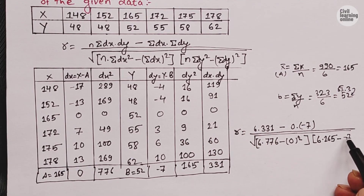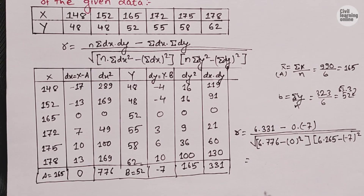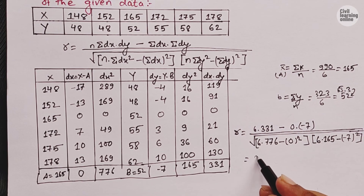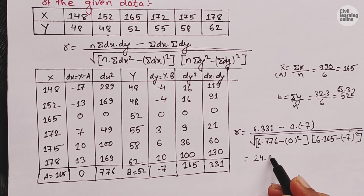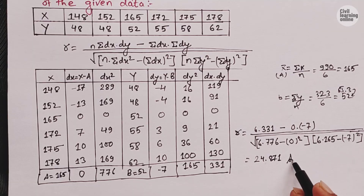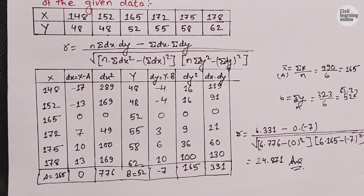On solving this we get the final answer. The final answer is r equals 0.871. I hope you understood this video. See you in the next video — till then stay safe, take care of yourself, and do not forget to share this video with your friends.